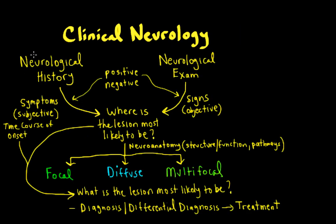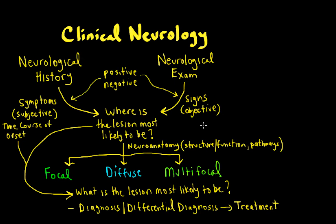In the context of clinical neurology, the neurological history gives us the patient's symptoms, which are subjective. The neuro exam gives us signs, which are objective, and collectively we can have positive or negative signs and symptoms — and that helps us answer the question: where is the lesion most likely to be?